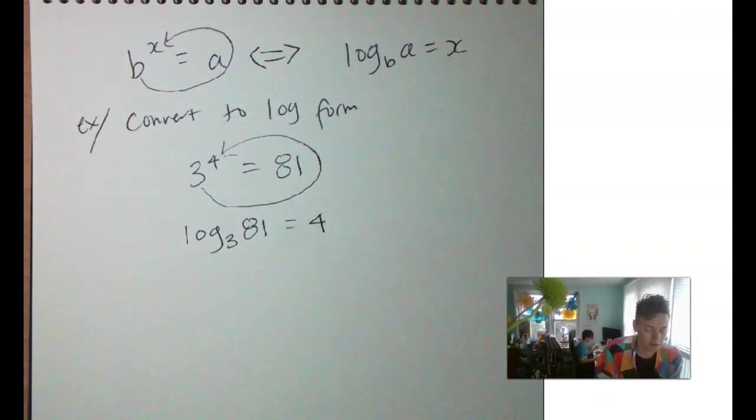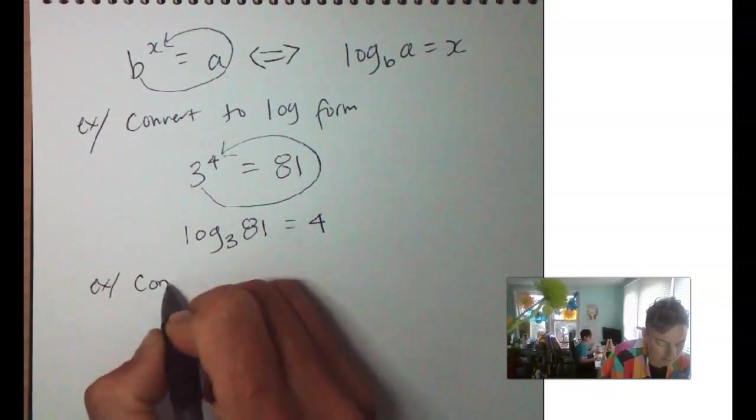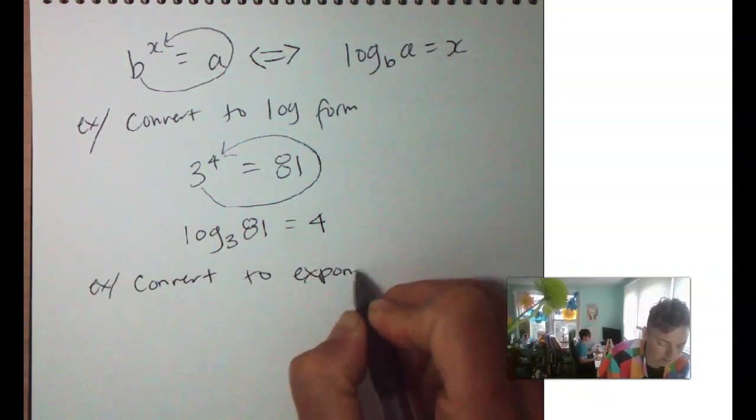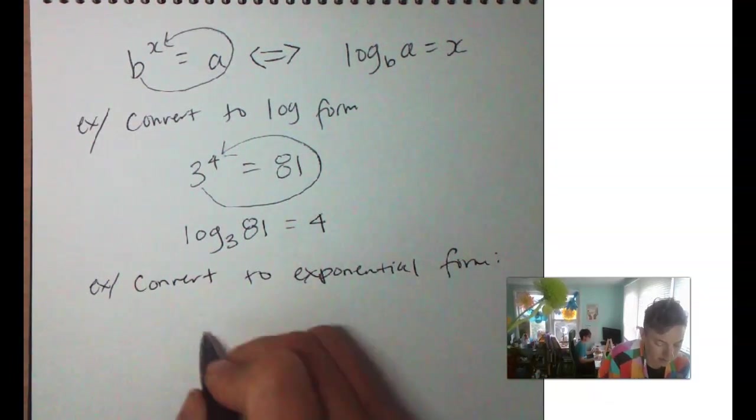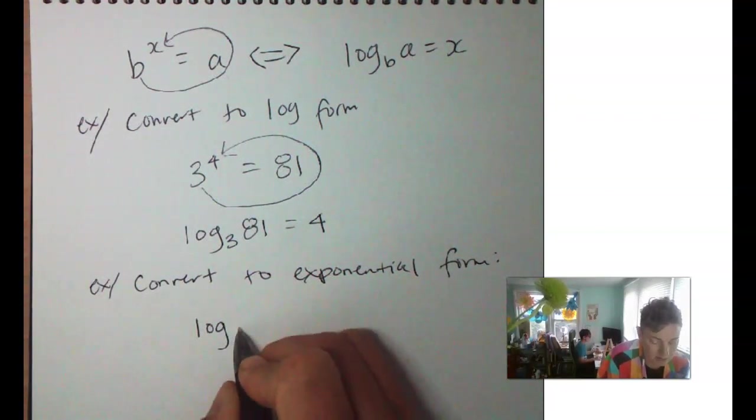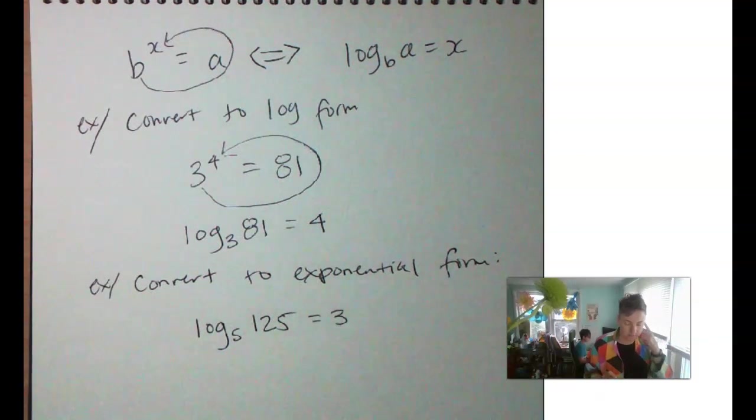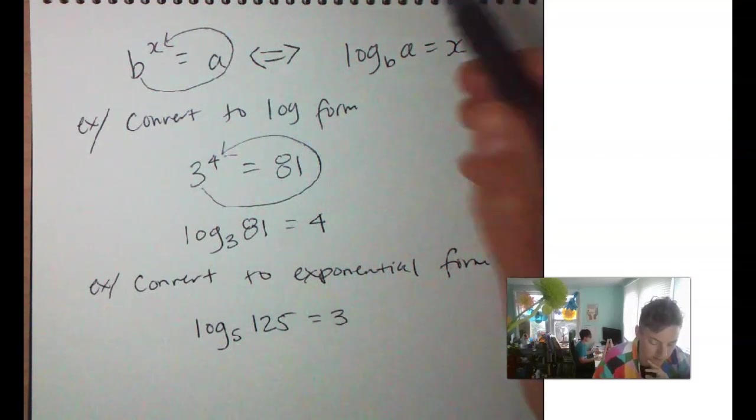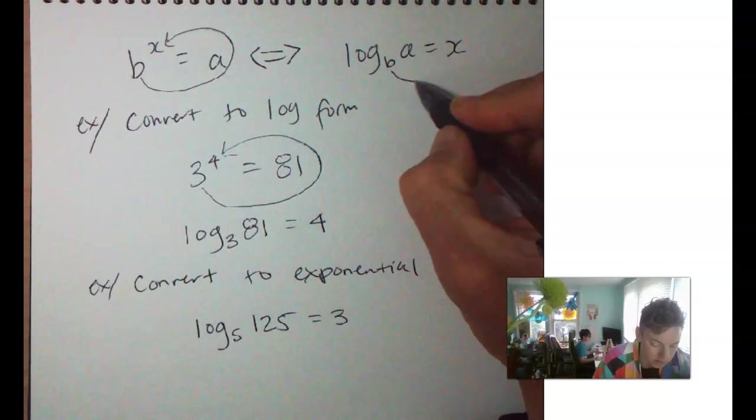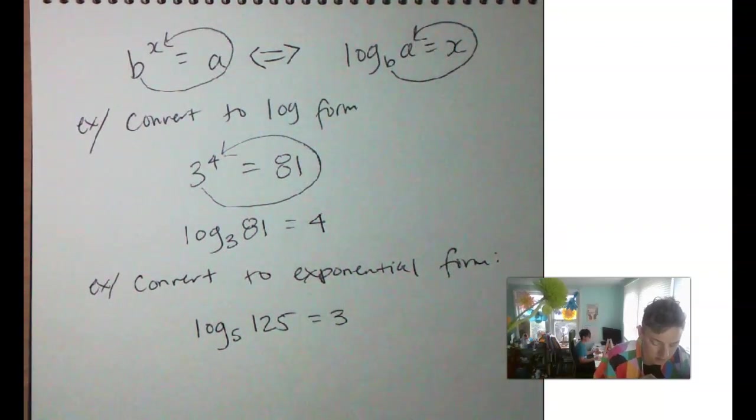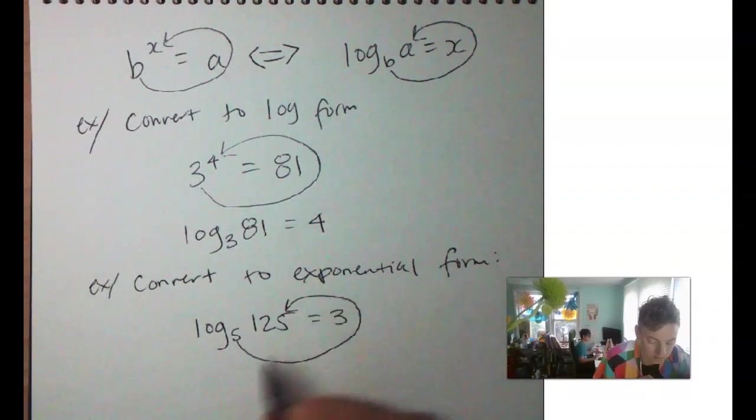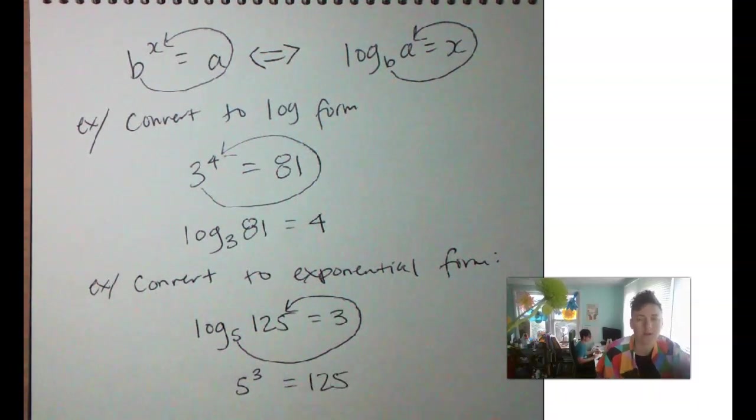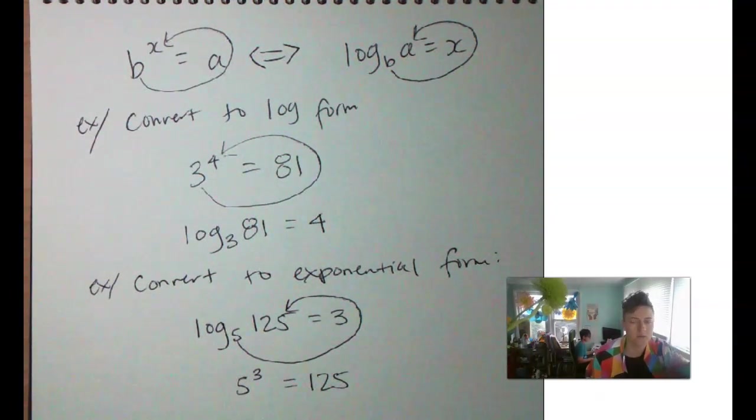Yeah, that's great. Now, let's go in the opposite direction. Let's convert to exponential, right? We've got log base 5 of 125 equals 3. Okay, so that's going to mean we'll take like here, this will be b to the x equals a, b to the x equals a. So, 5 to the 3 equals 125. 5 to the 3rd power equals 125. Which a lot of you already know, because you know your power stuff pretty well. That's cool. Alright, we're doing great.